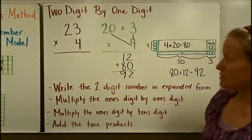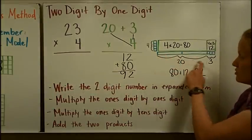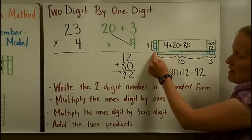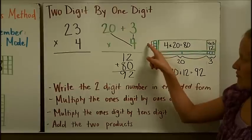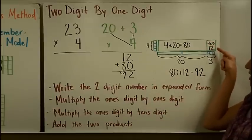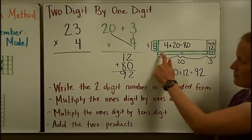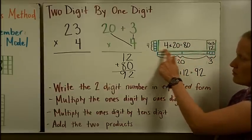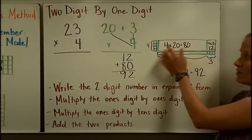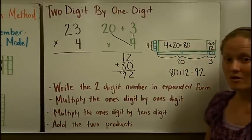We can show that also with an area model. I have shown twenty-three broken up into expanded form — here's the twenty, the tens part, and here's the ones part. Then I show four rows of that. Four times three makes twelve little blocks, and four times twenty makes eighty. If these are base ten rods, four rods on each side: forty plus forty is eighty. Then I add eighty plus twelve to get ninety-two.